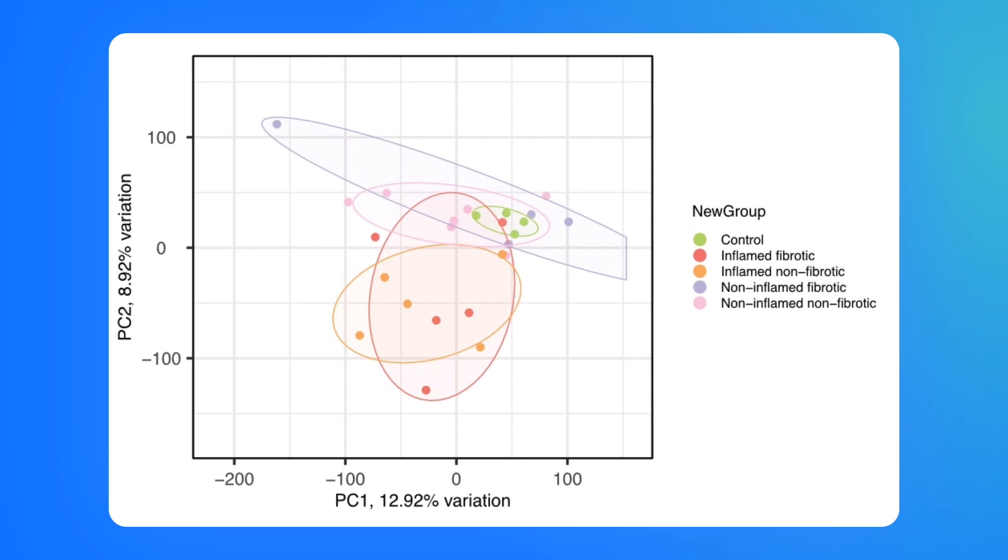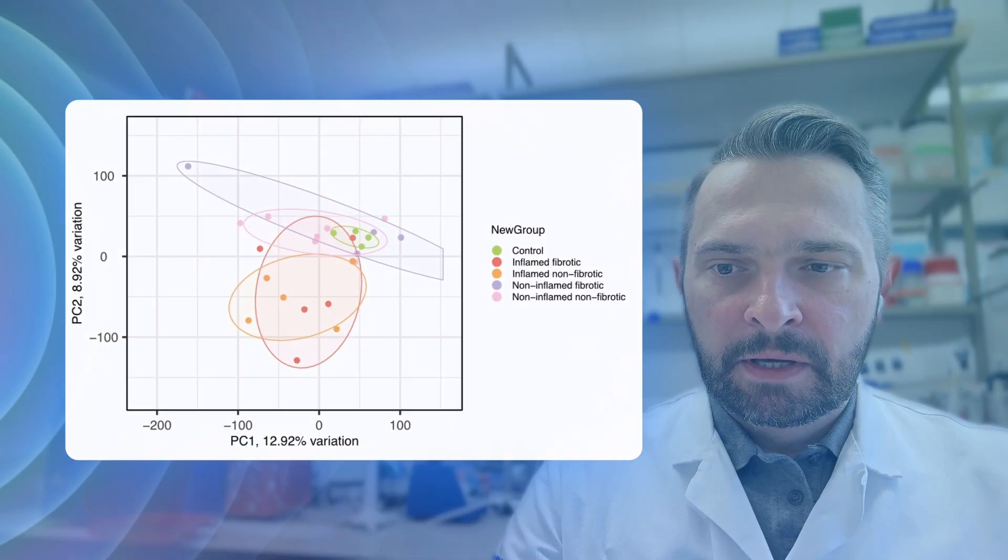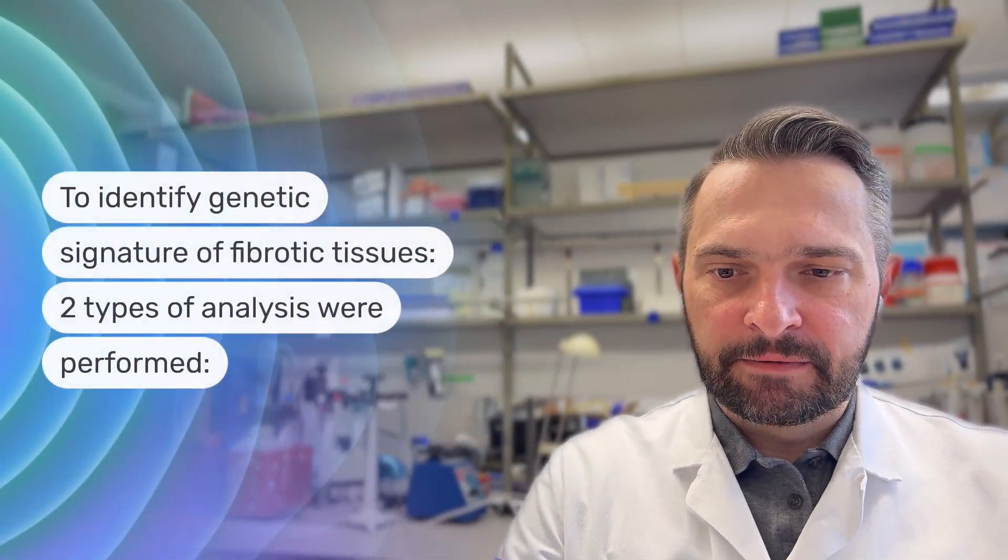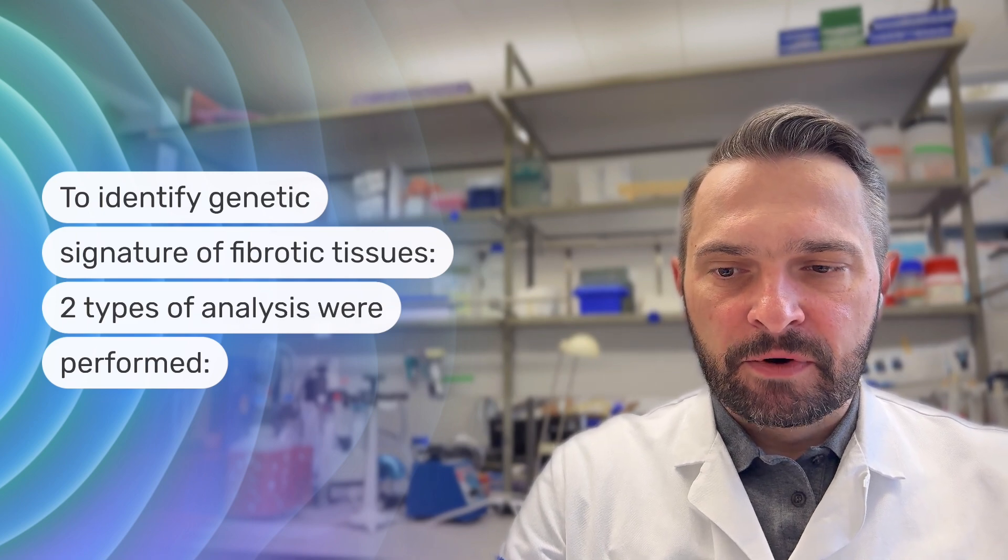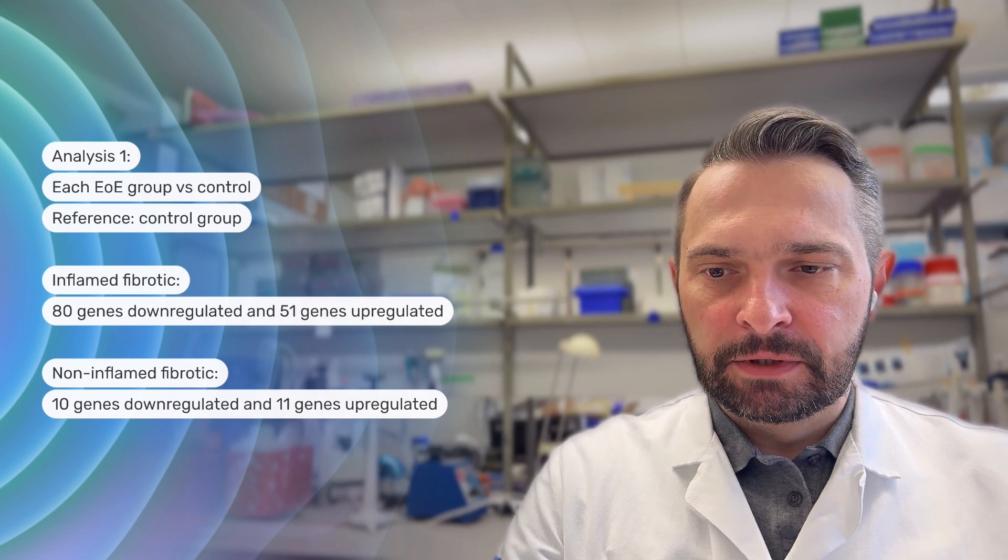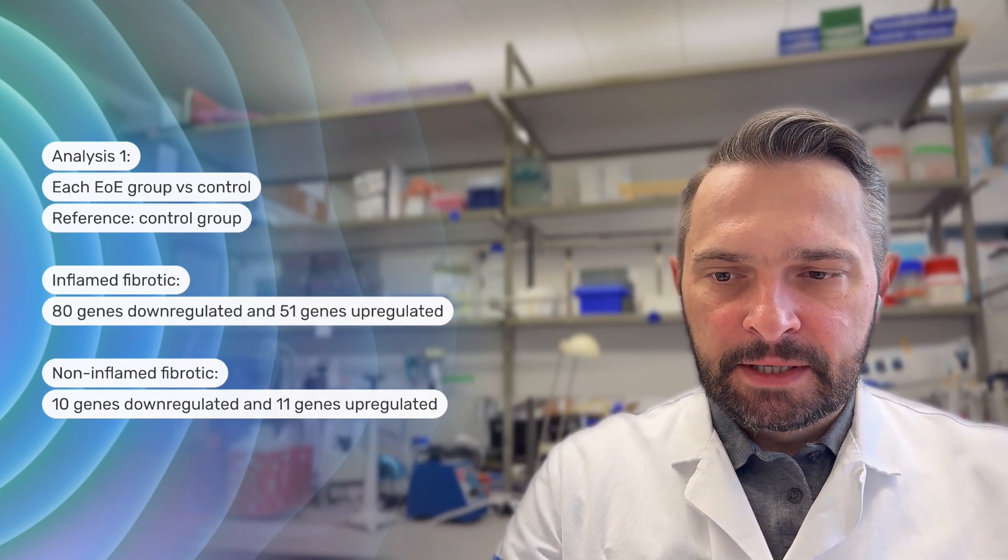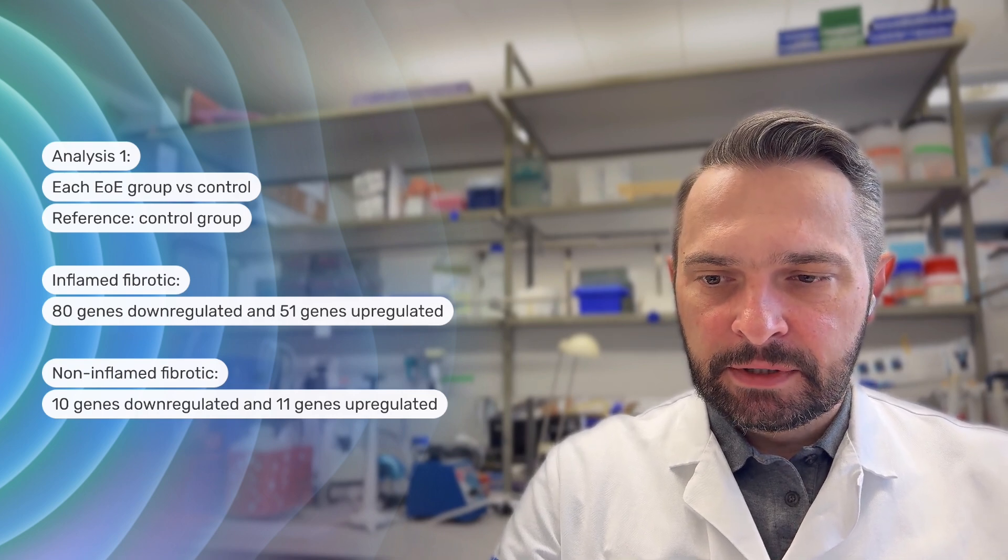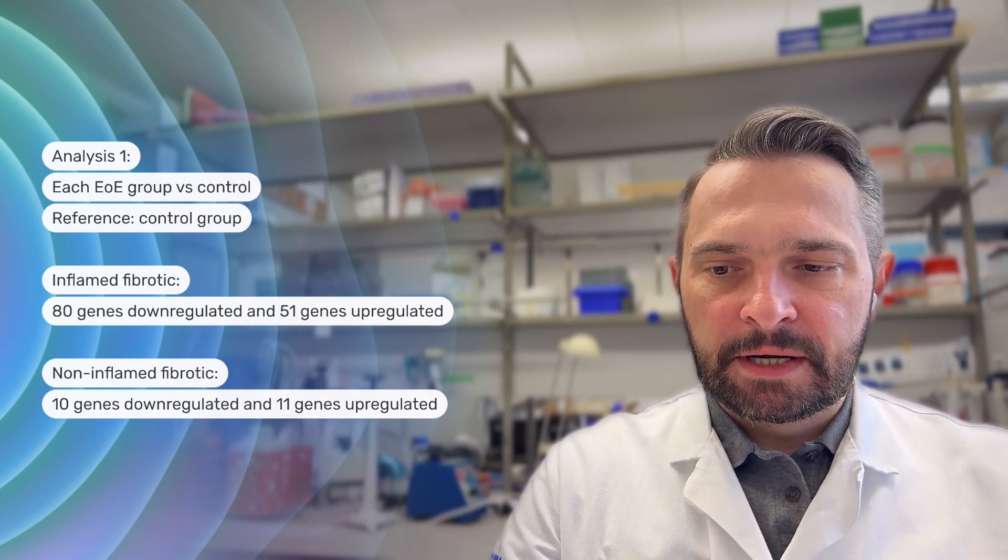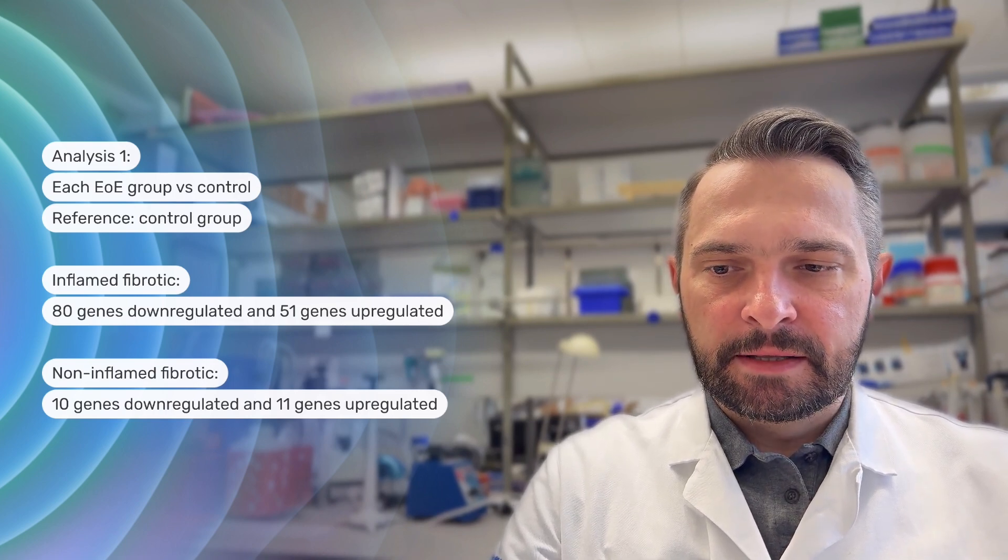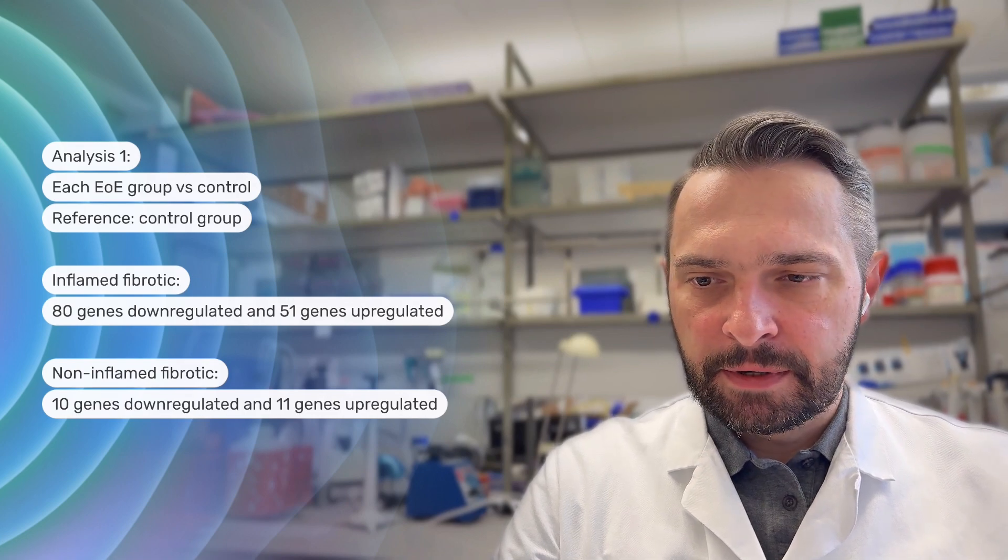It is well described that fibrosis is a result of chronic inflammation. To identify genes that are characteristic for fibrotic tissues, we performed two types of analysis. In the first analysis, we compared each of the EOE groups versus control groups. By this analysis, we found a list of genes which were characteristic for inflamed fibrotic and also a list of genes characteristic for non-inflamed fibrotic tissues. For the specific names and whole list of genes, you could refer to our paper.